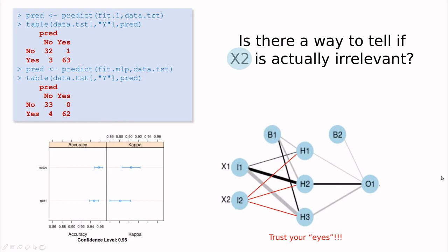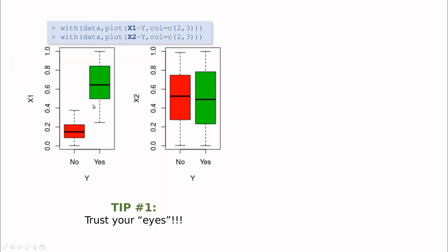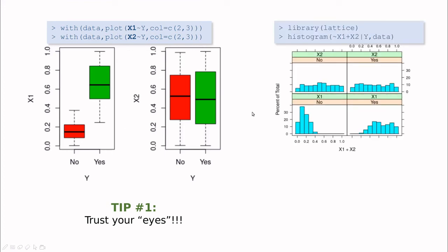But actually we don't need a fancy neural network to do that. So we can go back and using the good old box plot or the histogram. And as you can see here, when you compare the variability of x2 according to no and yes, and the variability of x1 according to no and yes, and you can see this in this couple of plots.